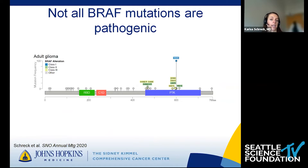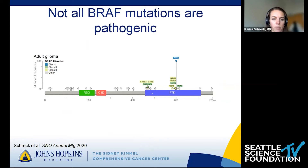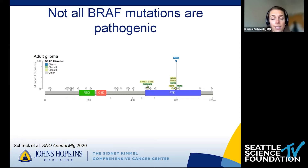Not all BRAF mutations we find are going to be pathogenic. In a lollipop plot of mutations identified in glioma, V600E is common, and class 2 and class 3 mutations are clustered in regions that make sense in the kinase domain. But there are also many mutations found in the linkage domain or N-terminal domain that are not pathogenic. Targeting those mutations is unlikely to produce any beneficial effect because these mutations are not activating BRAF signaling in those cells.